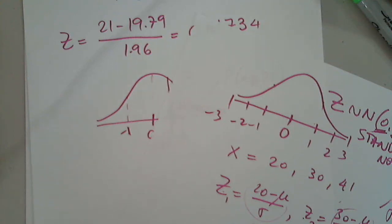Given a mean of 19.79 and standard deviation of 1.96, we want the probability that x is greater than or equal to 21. Let's compute this. This is the area to the right of 21.